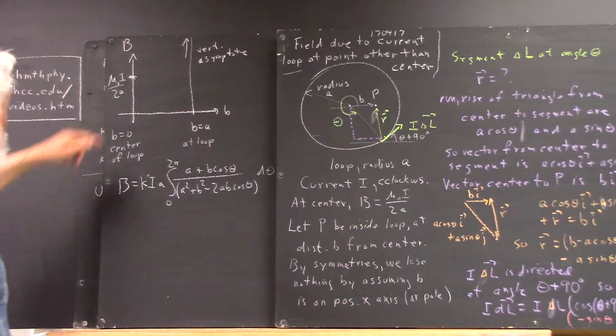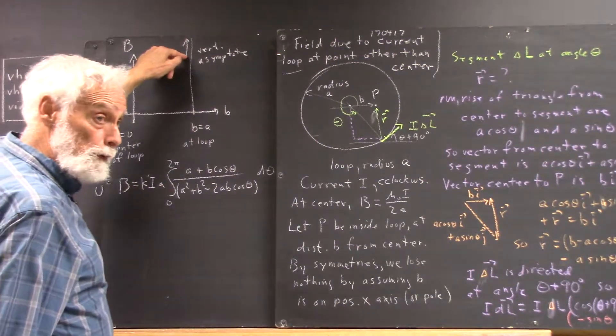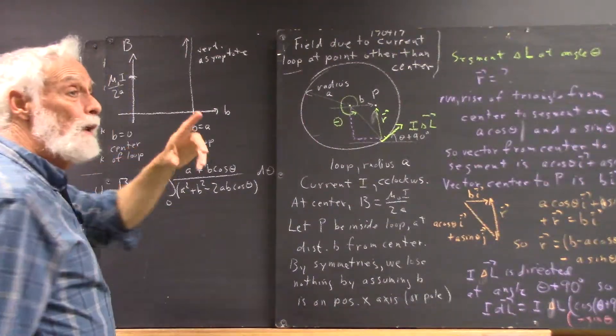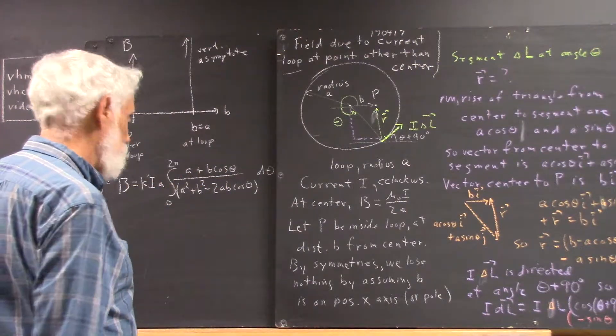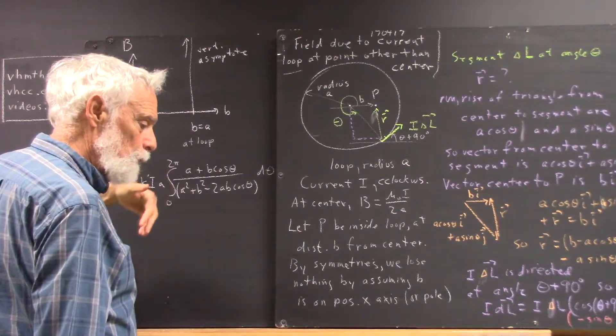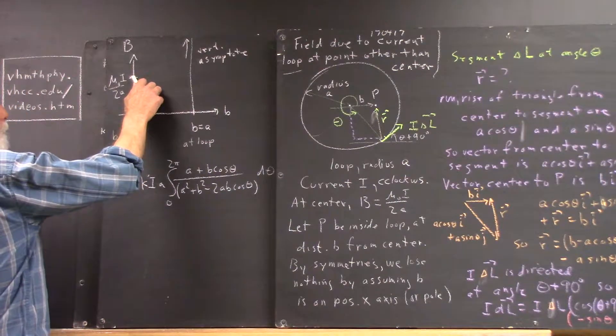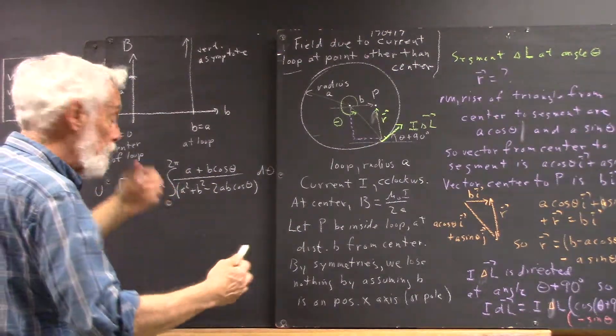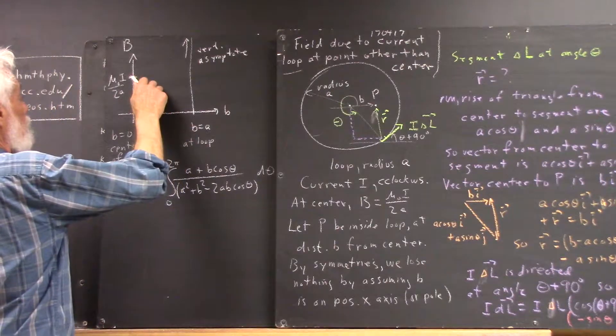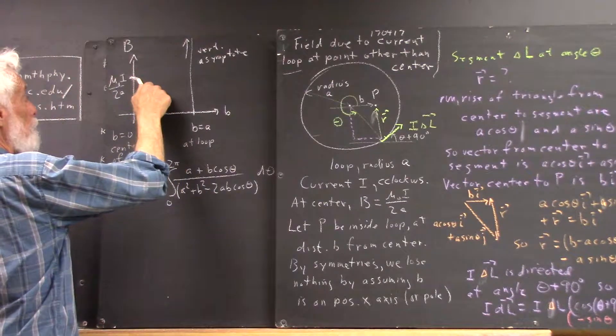The question is, what happens between here and your vertical asymptote? Now, what I think happens, and there are ways to analyze it, think about what happens when you move a little ways from the center. I kind of think that the field goes down here a little bit, and there are ways to reason that out, and I might talk about it. But my intuition is that it's going to do this.